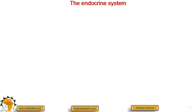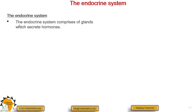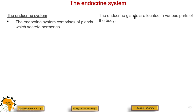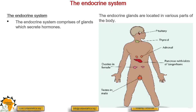The endocrine system is today's lesson. The endocrine system comprises glands that produce hormones, and the endocrine glands are located in various parts of the body, including the brain where we have the pituitary gland. We also have the adrenal glands, the thyroid, and the testes and ovaries in females.